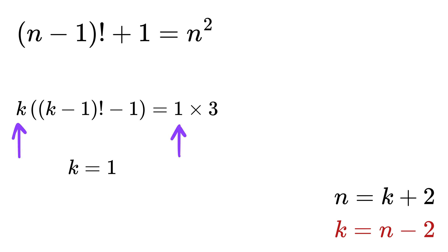First is if k equals 1, and k minus 1 factorial minus 1 equals 3. This means k minus 1 factorial equals 4, which is not possible because if k is 1, then this will become 0 factorial, which is 1. Now, 1 cannot be equal to 4, so we will discard it.